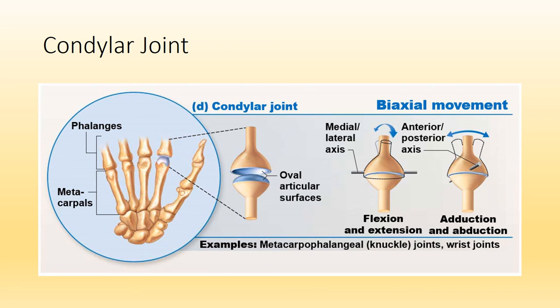A condylar joint allows for biaxial movement, or movement in two planes. Examples include the metacarpophalangeal joints — the joints between your metacarpals in the palm and the proximal phalanges — which are your knuckles. You are able to flex, extend, but also abduct and adduct. Your wrist joint is also an example of a condylar joint. Try to mimic these motions on your own.